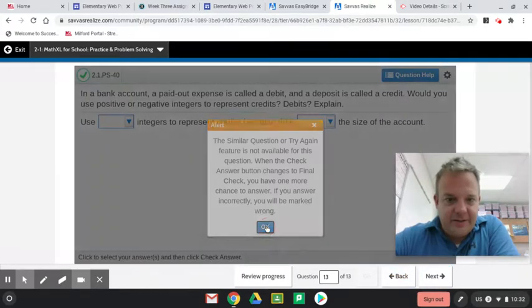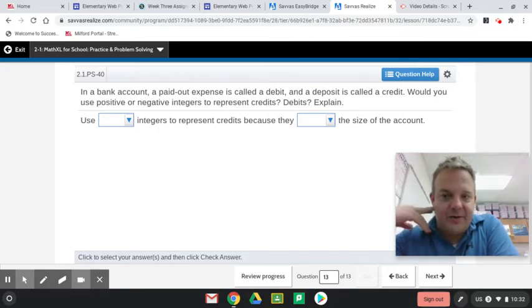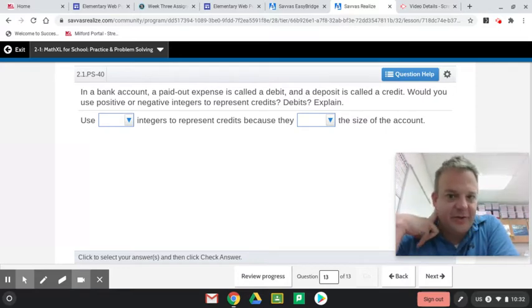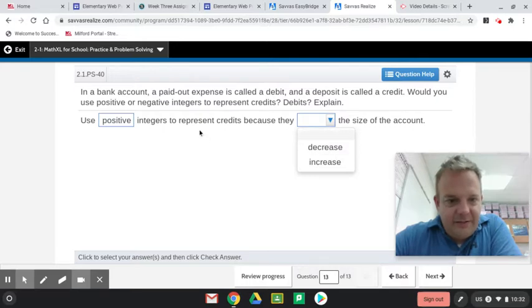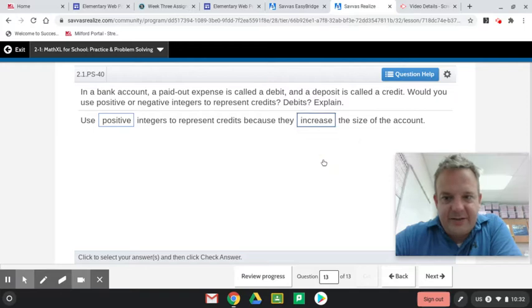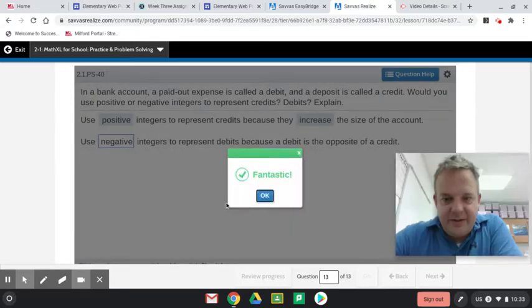In a bank account, a paid out expense is called a debit and a deposit is called a credit. Would you use positive or negative integers to represent credits? So credits would be positive. Use positive integers to represent credits because they increase the size. Then use negative integers to represent debits because it's the opposite.